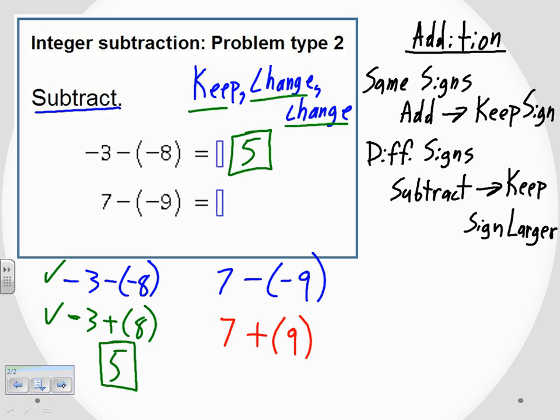So I kept the sign of the 7, I changed subtraction into addition, and then I changed the sign of the negative 9 into a positive 9.